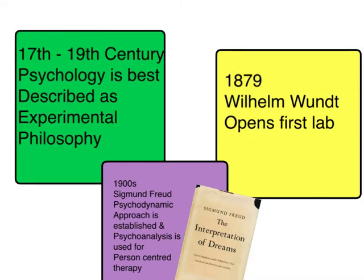In the 17th and 19th century, psychology is best described as experimental philosophy because it's very early psychology. Then we have William Wundt — discussed in our first lesson — who championed introspection, looking within ourselves, and how important our thought patterns are in determining behavior. He was known for opening the first psychology lab in Germany in 1879.